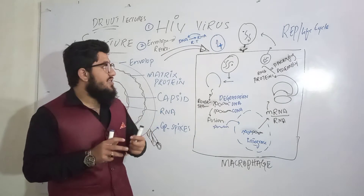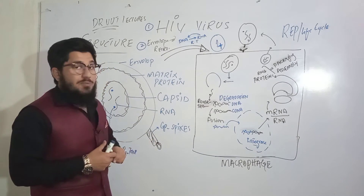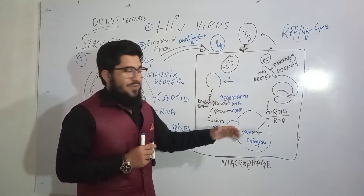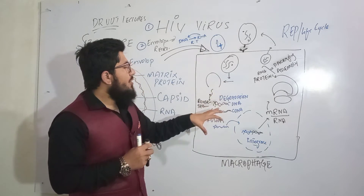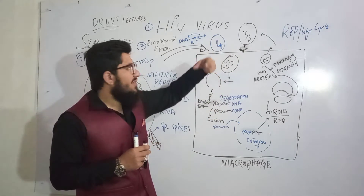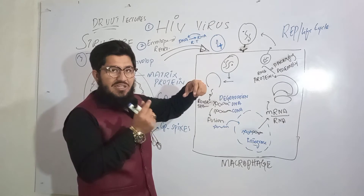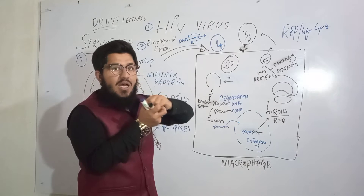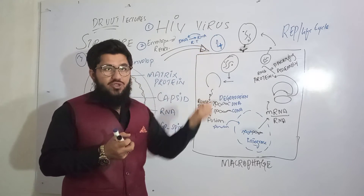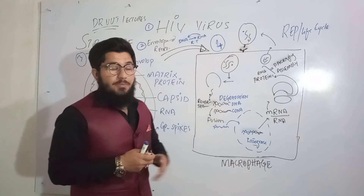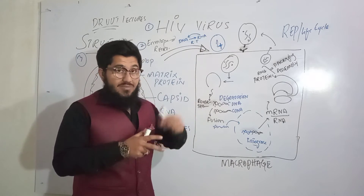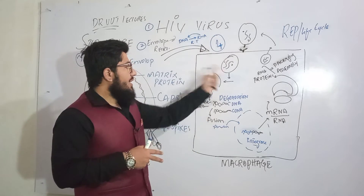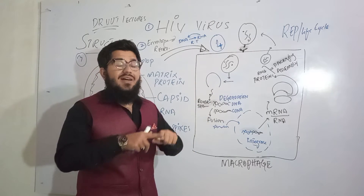This virus uses its glycoprotein spike to find the receptor on a particular immune cell — specifically the macrophage. On this macrophage, there is a CD4 receptor for this spike. The spike binds to the receptor, and after that, there will be endocytosis of this virus, meaning the virus moves inside the immune cell. The virus will then start uncoating.